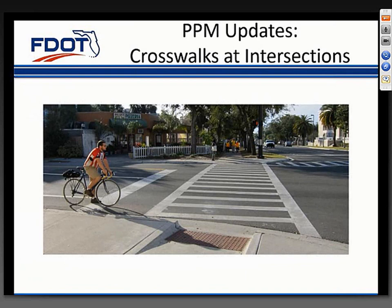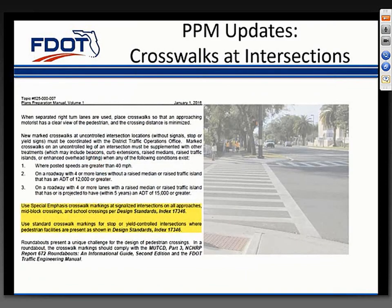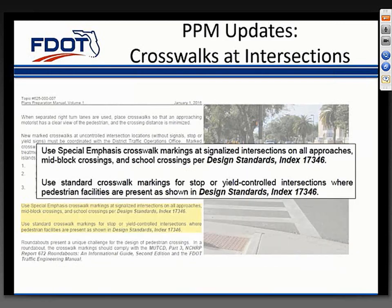Chapter 8 of Volume 1 is dedicated to pedestrian, bicycle, and transit facilities. We updated Section 8.3.3.1, which is crosswalks at intersections, to include specific language for special emphasis crosswalk markings and standard crosswalk markings. Special emphasis crosswalks are to be used at signalized intersections on all approaches, mid-block crossings, and spool crossings. Standard crosswalk markings for stop or yield control intersections are to be used when pedestrian facilities are present.